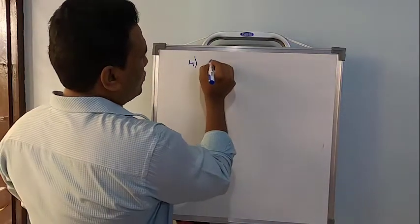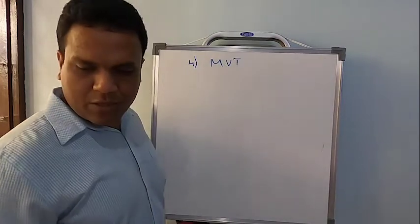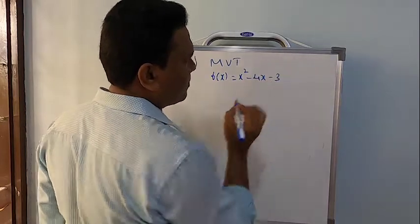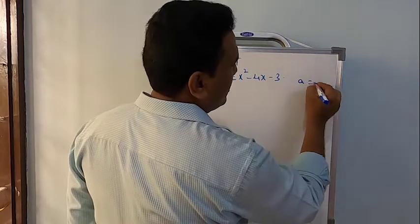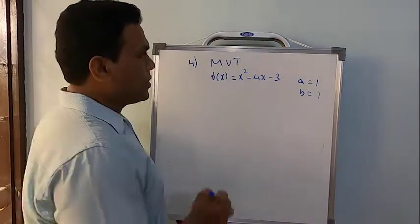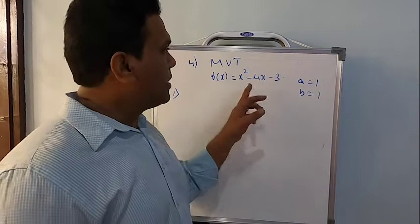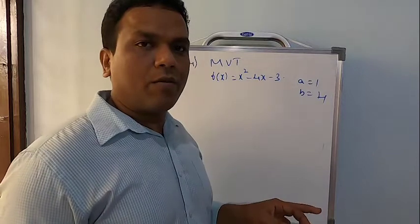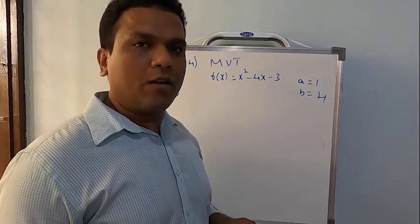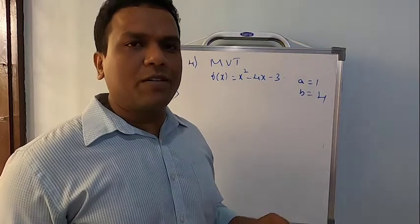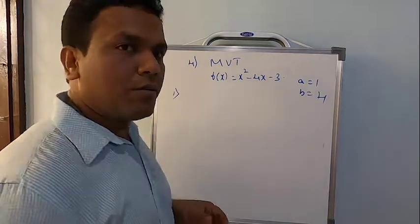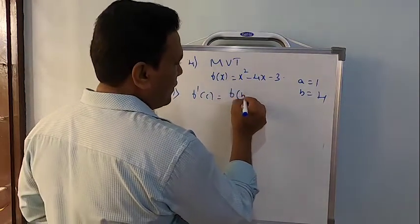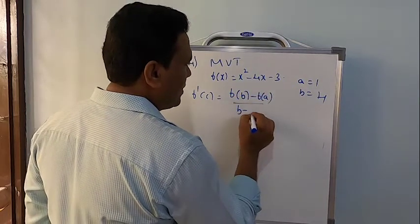Let us go to problem number four. Problem number four: verify the mean value theorem. The function is f(x) = x² − 4x − 3, with a = 1 and b = 4. For the mean value theorem, conditions remain the same — f(x) is a polynomial, therefore it is continuous in the closed interval [1, 4] and differentiable in the open interval (1, 4).